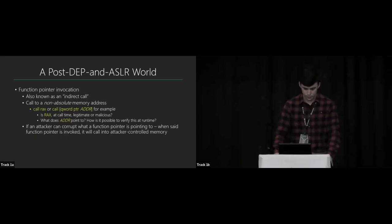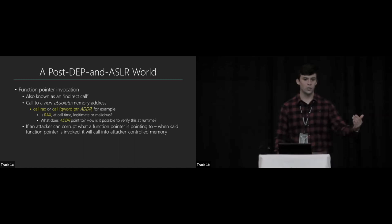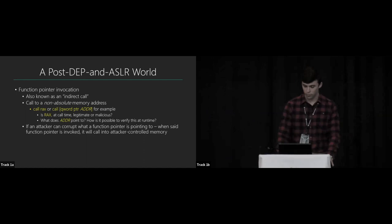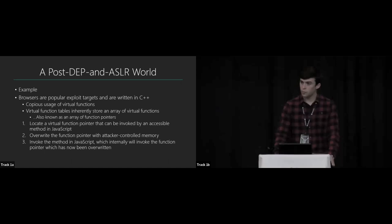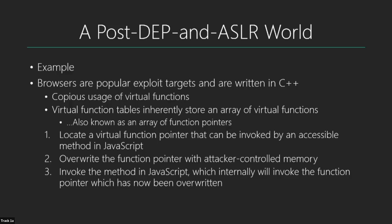If we're an attacker and we can override a function pointer — similarly to overriding a return address — the program will execute that function pointer and call into our attacker-controlled memory. Browsers are popular exploit targets and are written in C++, which uses virtual functions. Virtual function tables store an array of function pointers. We can locate a function pointer invokable by an accessible JavaScript method, overwrite it, and when JavaScript calls that method, the OS will look up the virtual function table and call into our attacker-controlled memory.